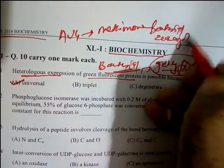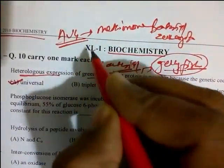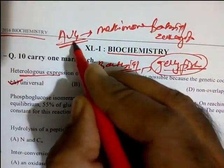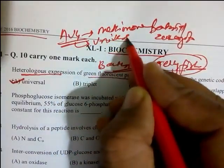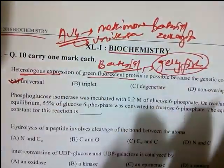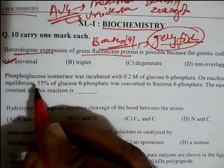For example, AUG codes for methionine in bacteria as well as in humans. This confirms the genetic code is universal in nature. So the answer to question one is the first option: universal genetic code.